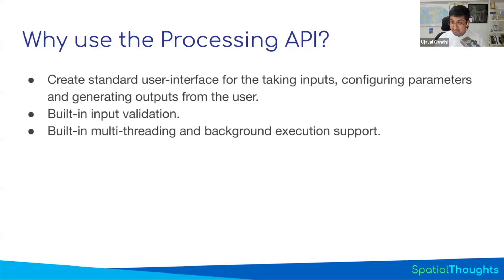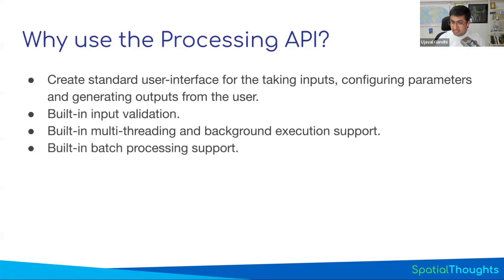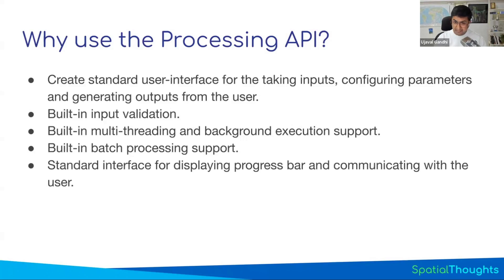The same applies to multi-threading. If you want to run your algorithm on multiple processors for parallel computing or run it in the background, all of this is very hard to do in your own scripts, but if you use the processing API, you get all of this free without doing any work. What if your users want to run your script as batch processing? Processing tools allow them to do that without you having to code explicit support for it. You can display a nice progress bar - when working with large layers, instead of your script hanging with no feedback, you get a nice progress bar and nicely displayed error messages.